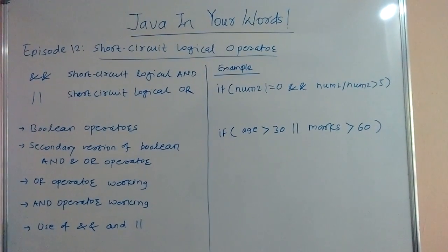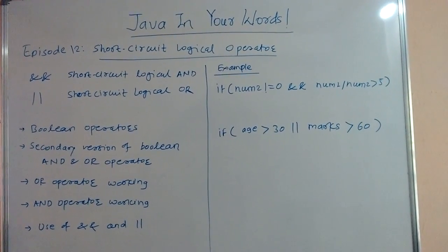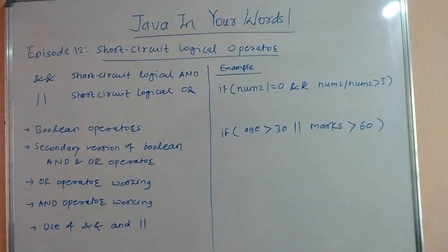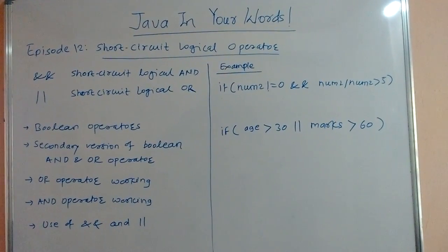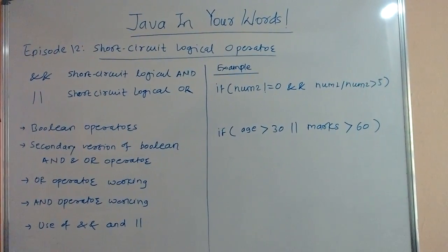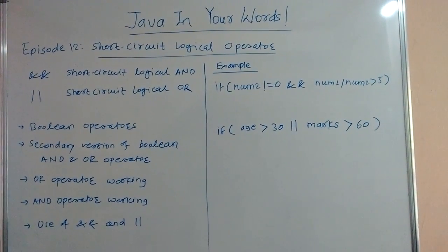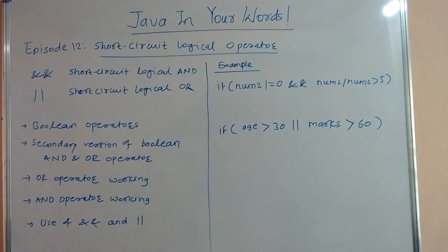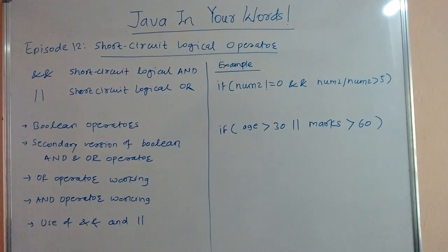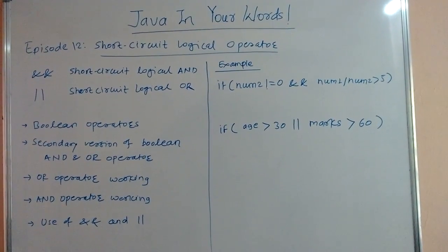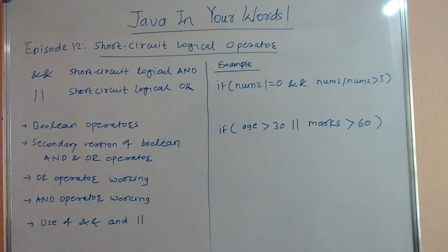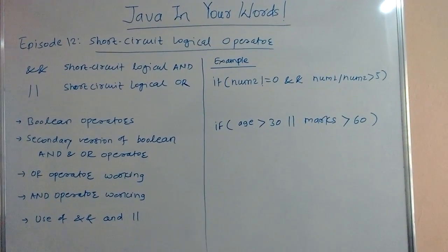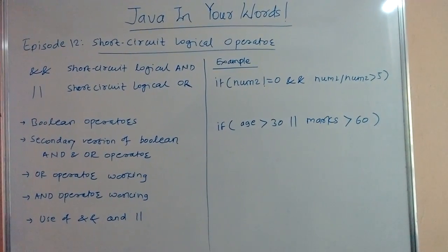Welcome to Java in Your Worst tutorial. This is episode number 12 on short-circuit logical operators. On the left-hand side of the whiteboard, the first operator is double ampersand, that is short-circuit logical AND. Another operator is double pipe, that is short-circuit logical OR.